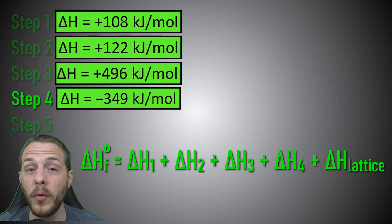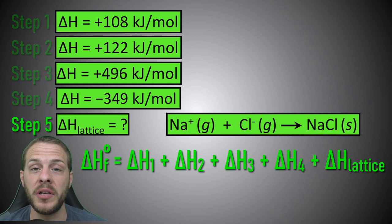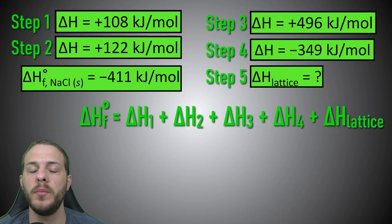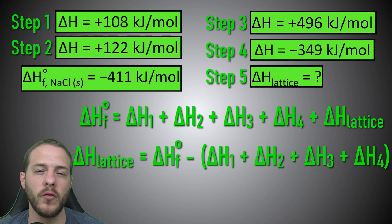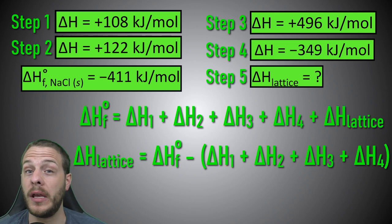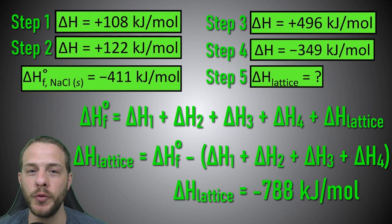So according to Hess's law, the standard enthalpy of formation of sodium chloride is equal to the sum of the delta H's for steps one through five. In this case, step five — the lattice energy — is the only one we don't know. If you ever encounter a problem like this, you'll be given all of the values except for one, or at least be allowed to look them up in the appendix of your chemistry textbook. To solve for the lattice energy, we can simply subtract the sum of the enthalpy changes for steps one through four from both sides of this equation. Plug in the values, put that calculator to work, and voila — we get a lattice energy of negative 788 kilojoules per mole.